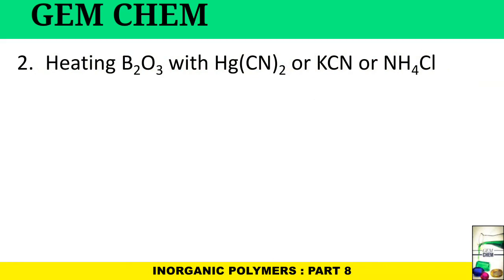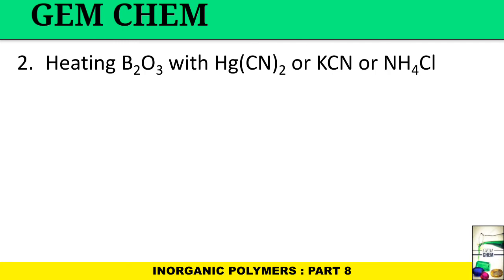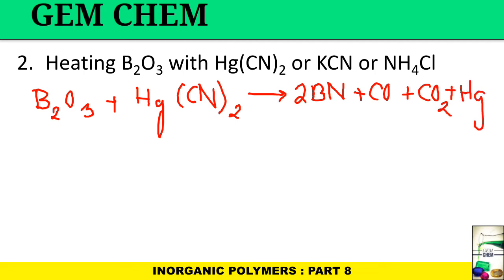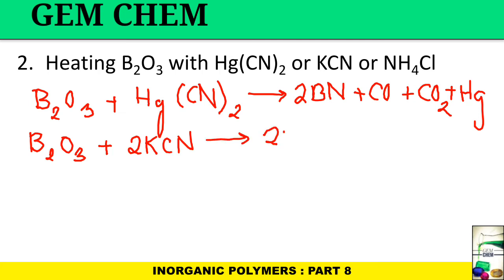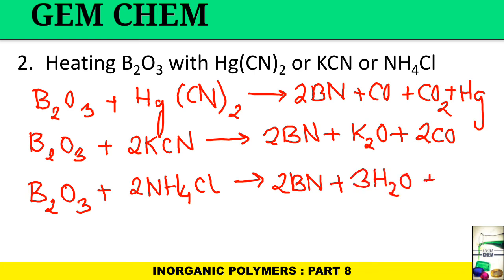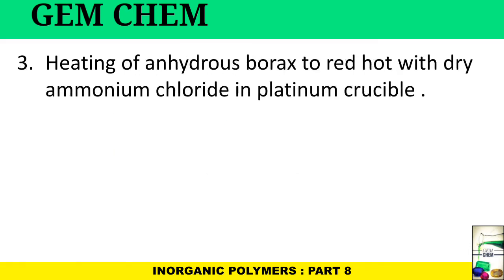The second method involves heating B2O3 with Hg(CN)2, KCN, or NH4Cl. The reactions are: B2O3 + Hg(CN)2 → 2BN + CO + CO2 + Hg; B2O3 + 2KCN → 2BN + K2O + 2CO; and B2O3 + 2NH4Cl → 2BN + 3H2O + 2HCl.